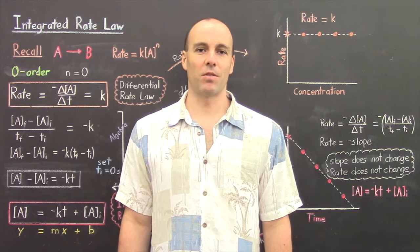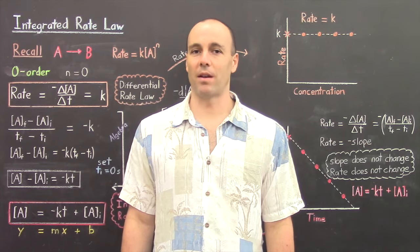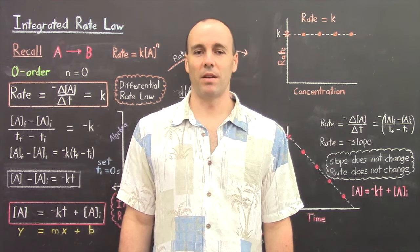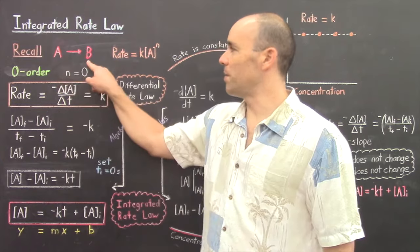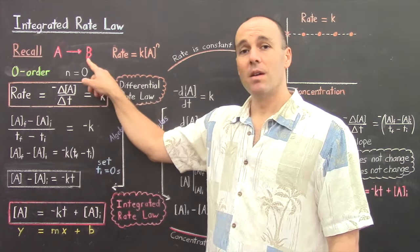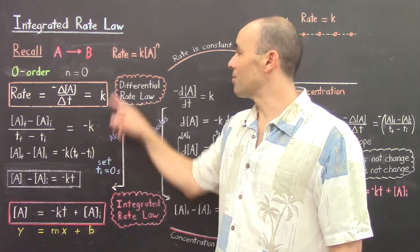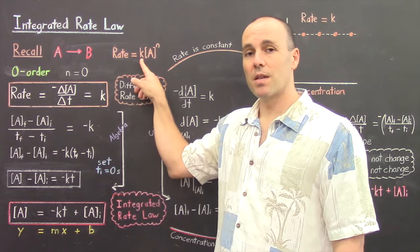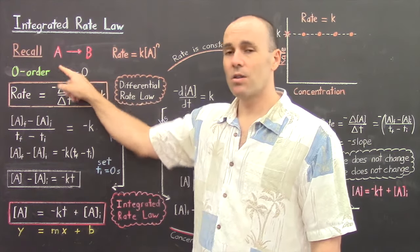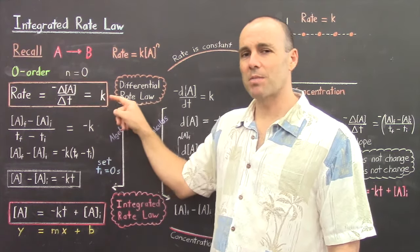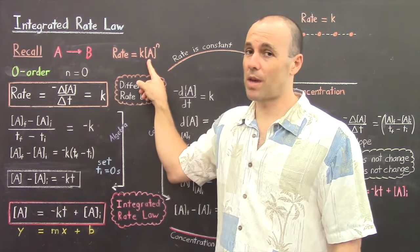In our previous lecture, we discussed the differential rate law. And if you recall, for some reaction where A forms B, the reaction rate is expressed as rate equals a constant times the concentration of the reactant raised to some exponent, which is called the order with respect to reactant A.